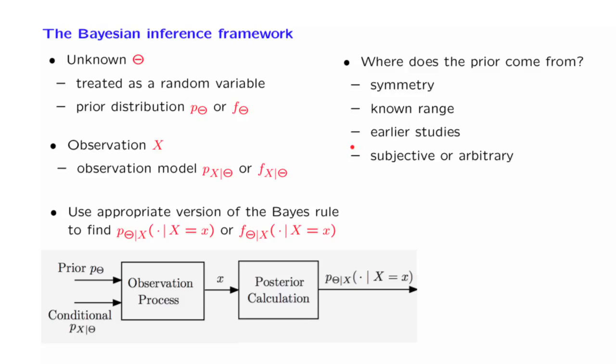And in some cases, finally, the choice could be arbitrary or subjective, just reflecting our beliefs about theta, some plausible judgment about the relative likelihoods of different choices of theta.